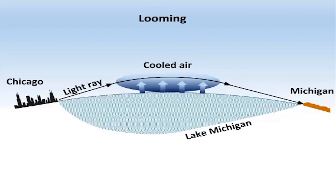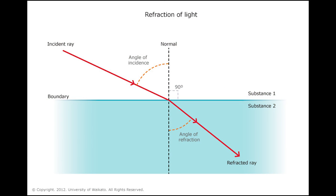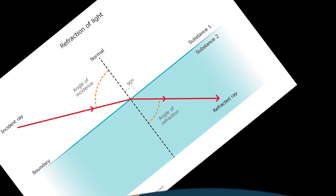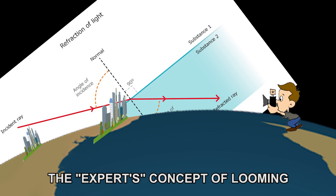Okay, so again, this is their graphic. According to them, we know the Earth's a ball, so therefore this is the way it's working. Chicago is over here on the left. We've got the curve of the Earth here and the light rays, which would normally be going straight across, have to be bent due to the atmospheric lensing, the density of the atmosphere, causing the light to refract downward — basically just conveniently enough over the top of the bulge of the curve so that we can see it on the other side.